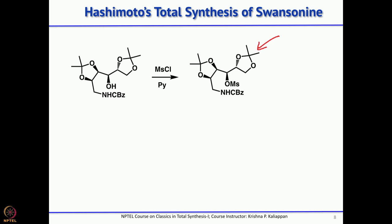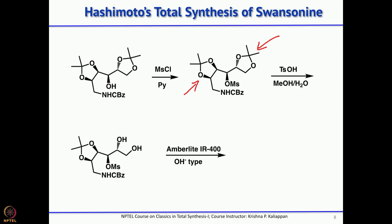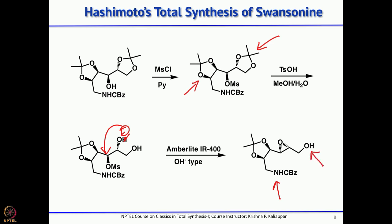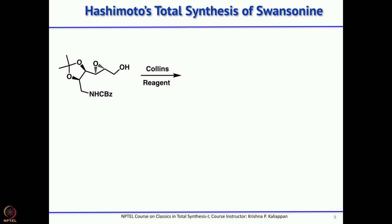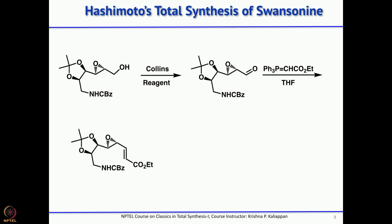The OH is converted into the mesylate. Then selectively, the terminal acetonide — which is more exposed — can be selectively removed by treating with paratoluenesulfonic acid and methanol to get the diol. This diol on treatment with amberlite in OH⁻ form generates an anion that attacks the carbon bearing the mesylate in an SN2 fashion to give the epoxide. Now with the epoxide in place and nitrogen also in place, you homologate the primary alcohol by oxidation using Collins reagent to get the aldehyde. Then a stabilized Wittig reaction homologates to give the alpha-beta unsaturated ester.